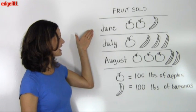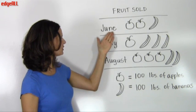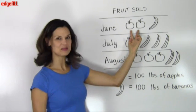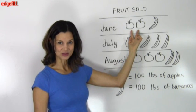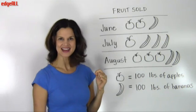Looking at the graph, we can tell that in June, 200 pounds of apples were sold, and 100 pounds of bananas.